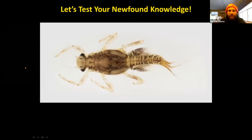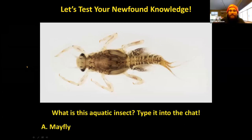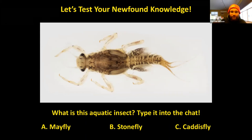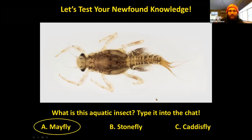Next: what is this aquatic insect — a mayfly, a stonefly, or a caddisfly? Remember to look at things like the tail, gills, and wing pads. People are going with mayfly — and you're correct, this is indeed a mayfly. Fantastic job.